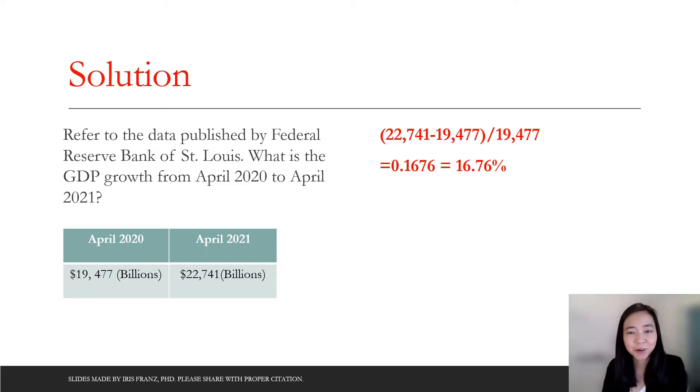Now we can compare our answer. So we know the growth rate is equal to the new number minus the old number divided by the old number. And if you calculate that, you will see that our growth rate in GDP from April 2020 to April 2021 was 16%. And that's very high because in April 2020, we're in lockdown.